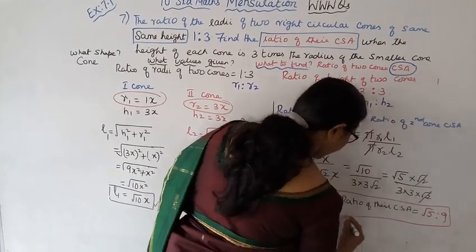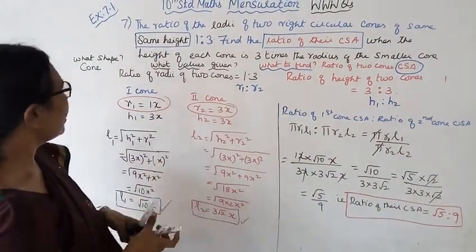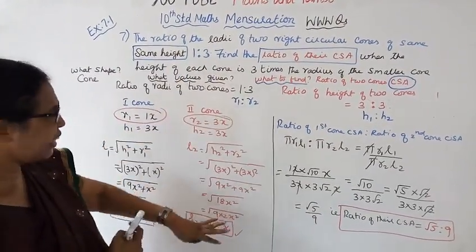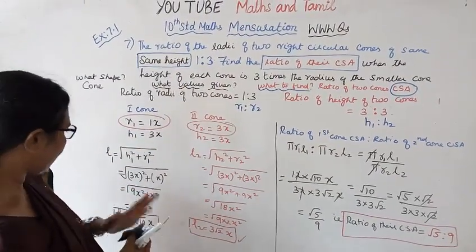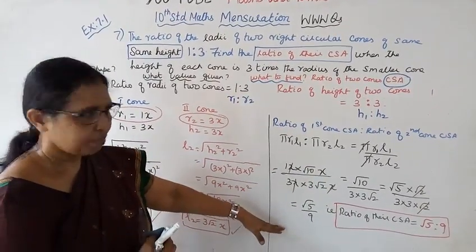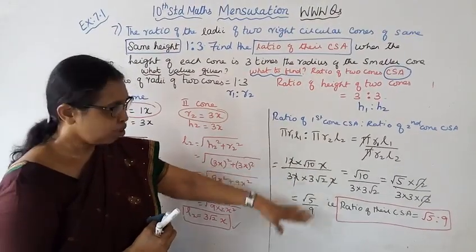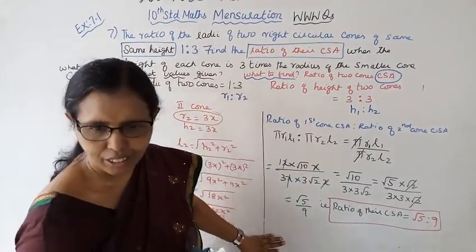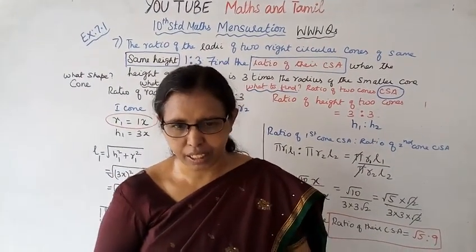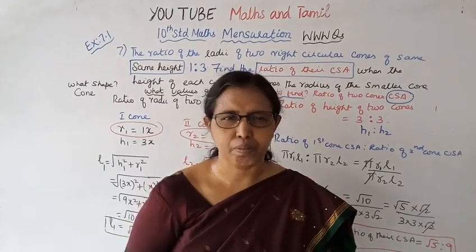That is the required answer. Using the WWW Costing method, we first found L1 and L2, then used the CSA formula to get the answer. This channel helps you to get 100 marks. Please subscribe to the channel, click the bell button, and watch more videos. Thank you.